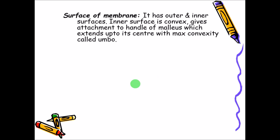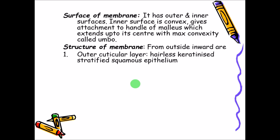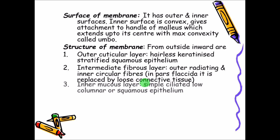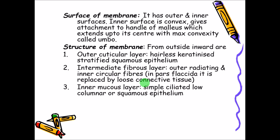The malleus keeps the tympanic membrane taut and stiff. The membrane is trilaminar: the outer layer is a cuticular layer of hairless keratinized stratified squamous epithelium; the middle layer is fibrous with outer radiating and inner circular fibers keeping the pars tensa solid. The pars flaccida lacks this fibrous layer, having loose connective tissue instead, making it lax. The innermost layer is the mucous membrane of the middle ear — simple ciliated low columnar or squamous epithelium.